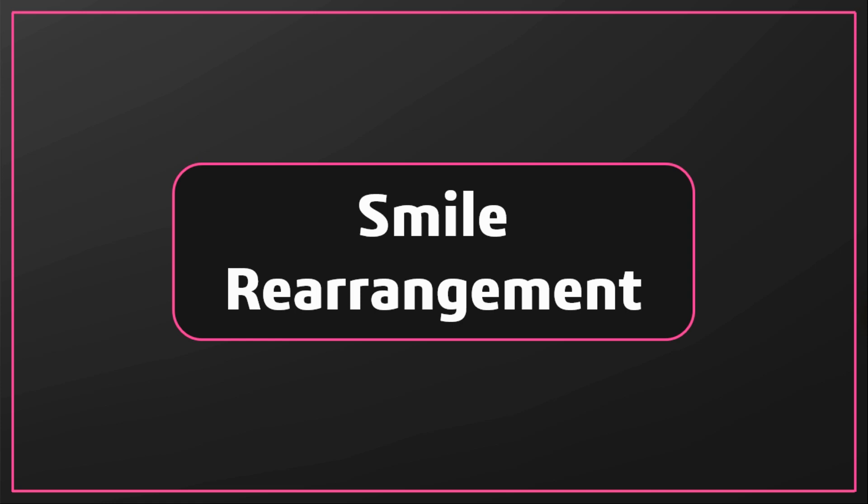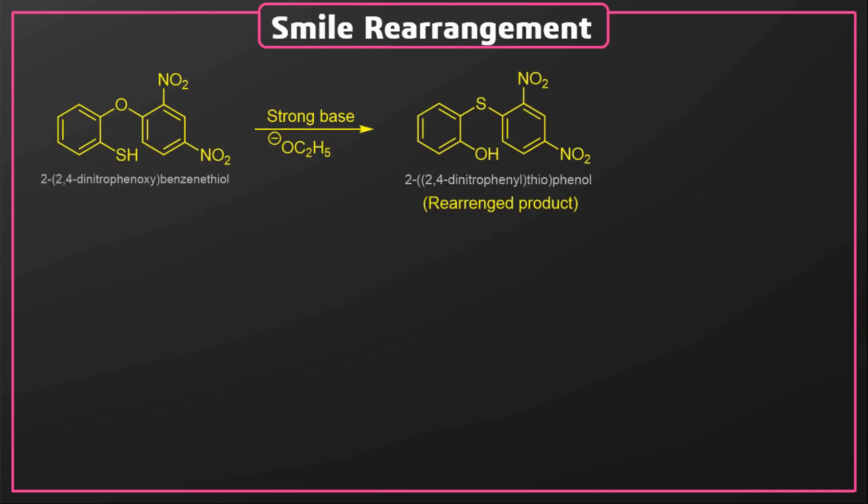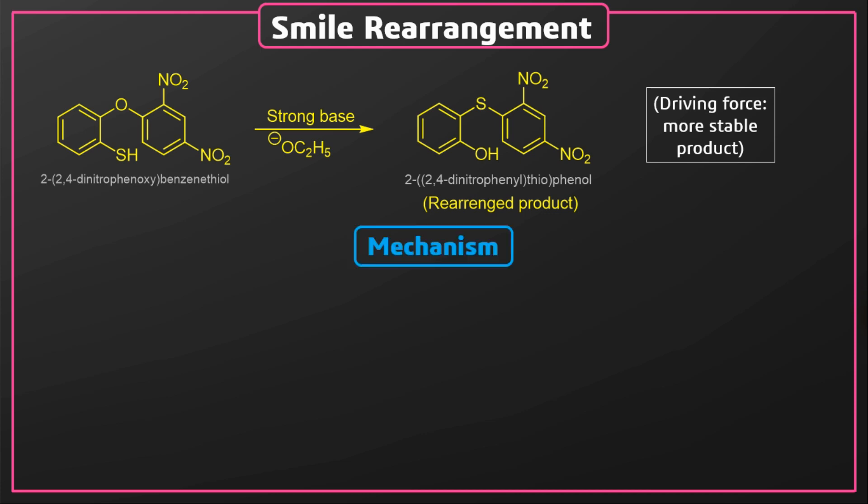Today we are going to discuss Smiles rearrangement. Smiles rearrangement is the rearrangement of the derivative of dinitrobenzene. In the presence of a strong base, the bonding of the functional groups with the benzene ring is switched according to their stability, and the rearranged product is formed. The driving force for this rearrangement is to make a more stable rearranged product.